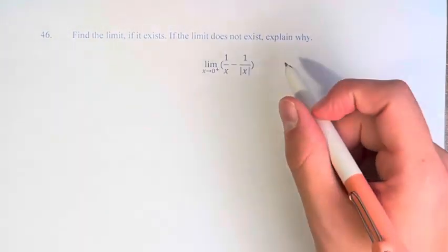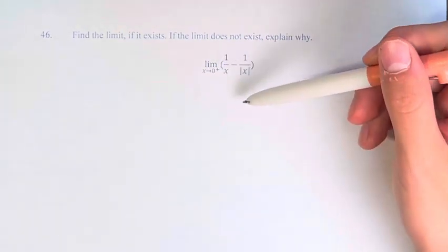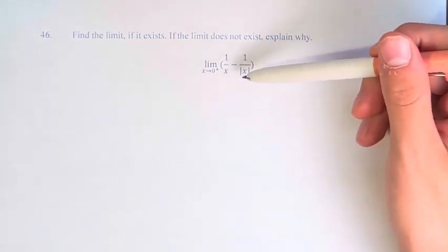So what we're going to do here is subtract these two fractions, because right now if we plug in 0, we'd be dividing by 0. So we want to do some limit laws to these, but first we have to get rid of the absolute value.